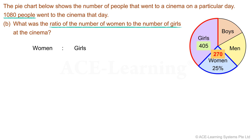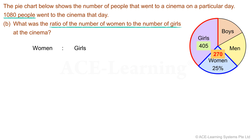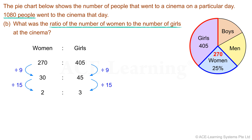Step 3: Carry out the plan. The number of women is 270 and the number of girls is 405. Dividing both sides of the ratio by 9 gives 30:45, then dividing both sides by 15 gives the ratio in its lowest terms: 2 to 3. The ratio of women to girls was 2 to 3.